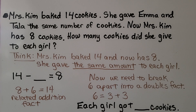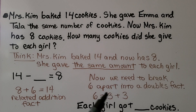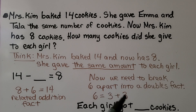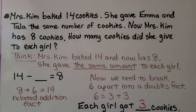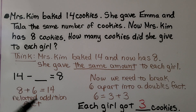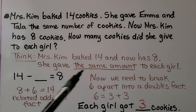But we're not finished. We need to break the 6 apart into a doubles fact, because she gave the same amount to each girl — two equal amounts that total 6. So we split the 6: 3 plus 3 works. That means each girl got 3 cookies. We used a related fact, then figured out what two same-size numbers equal 6 — and it was a doubles fact.